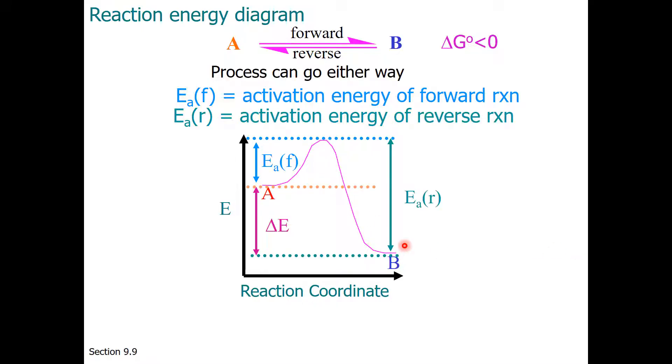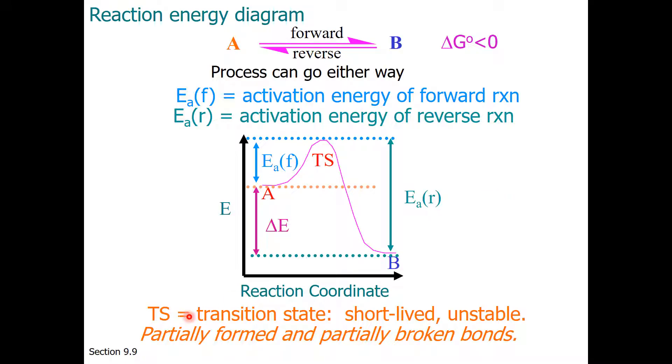If we think about the reaction being reversible, then to go backward from product to reactant, there is also a hill to climb. This is the energy of activation reverse. What is at the top of the hill? The transition state.